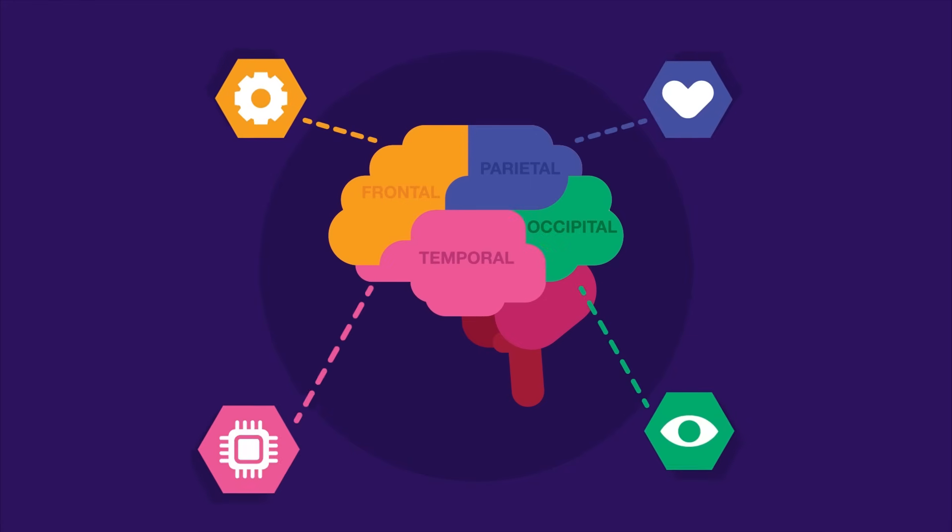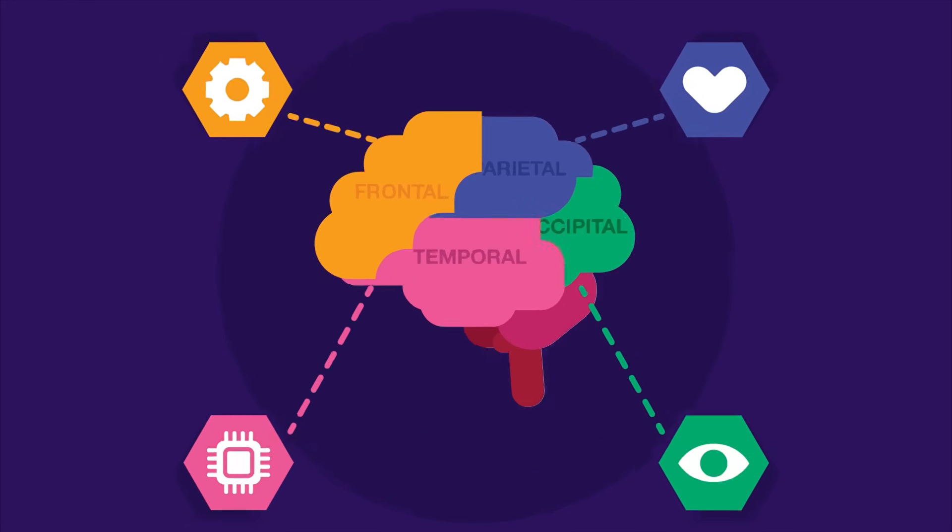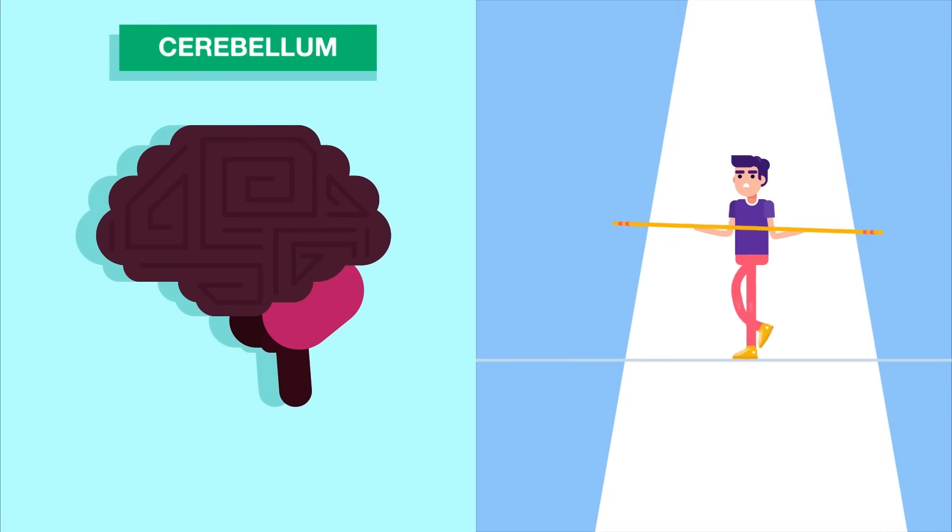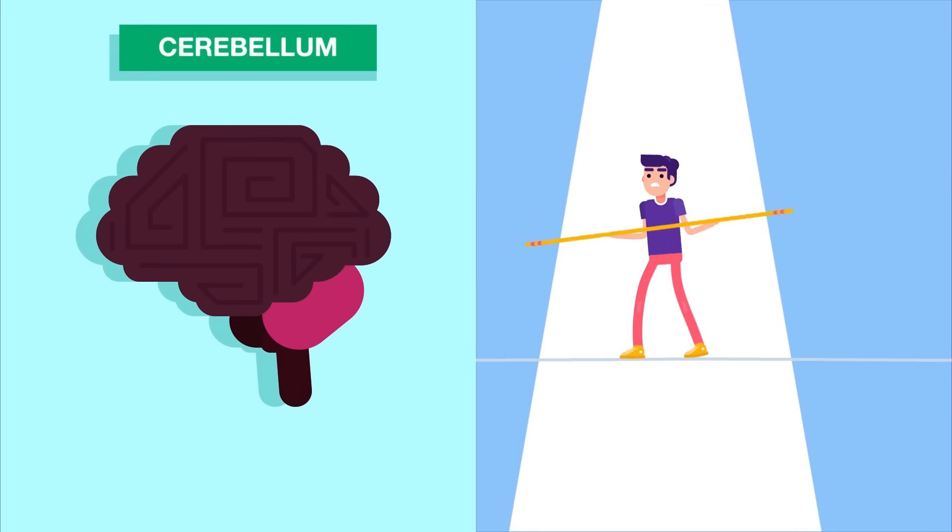Each lobe performs different functions. Cerebellum is responsible for movement and coordination. It gives you sense of balance and thus prevents you from falling down.